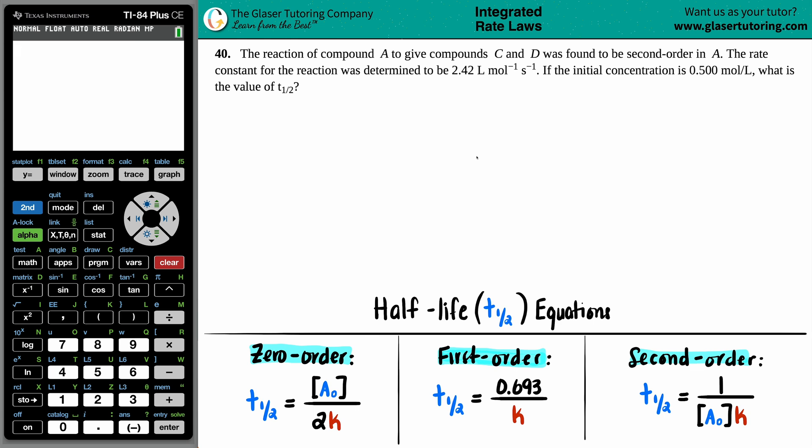Number 40. The reaction of compound A to give compounds C and D was found to be second order in A. The rate constant for the reaction was determined to be 2.42 liters per mole per second. If the initial concentration is 0.5 moles per liter, what is the value of T half?